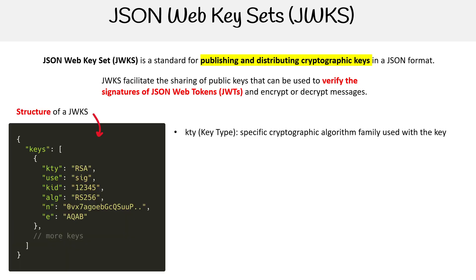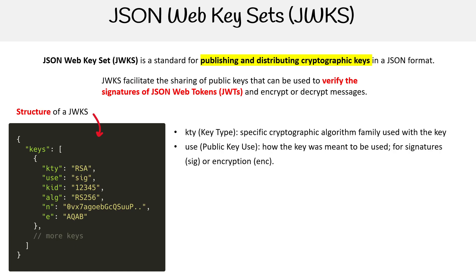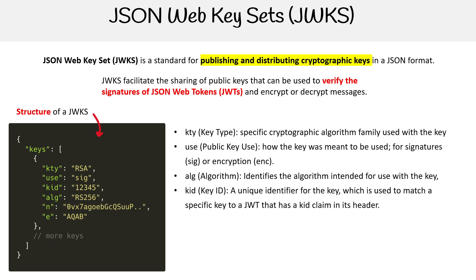They have this particular structure. We have the key type, which specifies the cryptographic algorithm family used for the key. We have the public key use — how the key is meant to be used, whether for signatures or encryption. We have the algorithm being used for the key, and the key ID, which helps you match up the JWT to the actual key being used.